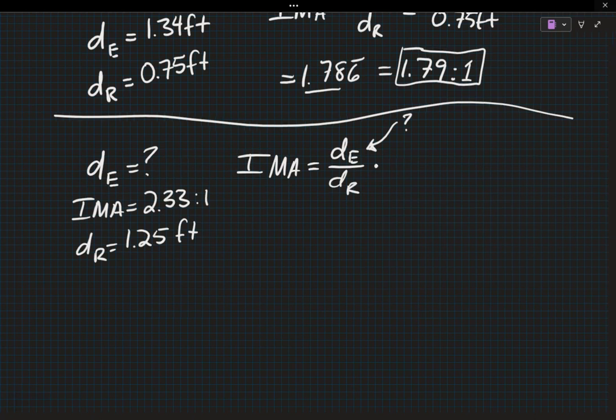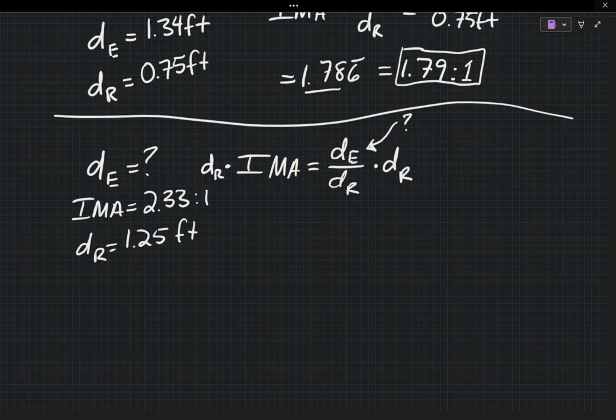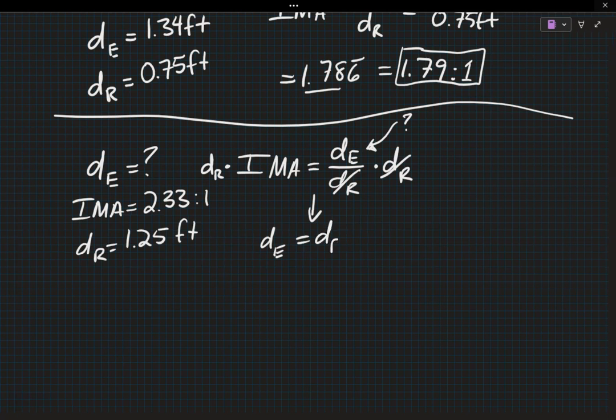The way that we get rid of the DR is we do the opposite operation. Right now it's being divided. The opposite of division is multiplication. So what we are going to do is multiply both sides by DR and then this DR here cancels because this is technically DR divided by DR, which equals 1. So it just goes away. I'm going to rewrite my equation and flip it around with DE on the left side. It is equal to DR times IMA. And that's our equation solved for DE.